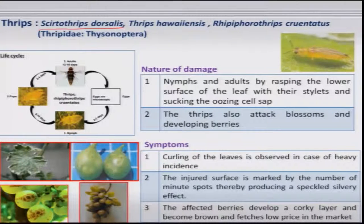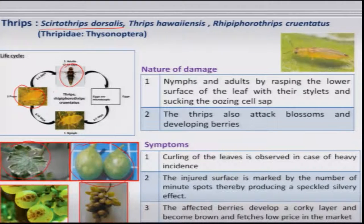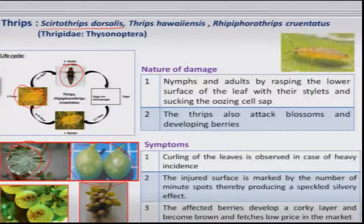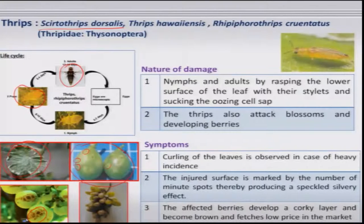Thrips — Scirtothrips dorsalis — is quite serious both on the leaves and on the tender berries; both nymphs and adults are the damaging stage. On leaves, they remain on the undersurface, scraping the leaf tissues, resulting in silvery patches and curling of the leaves. Most importantly, on tender berries they scrape the skin, initially developing white patches which later become brown with a patchy or corky appearance, sometimes splitting open, leading to secondary infection and poor development of the bunches.